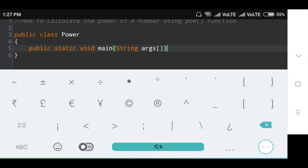And void clarifies that the main method will not return any value. Then main is the name of the method.